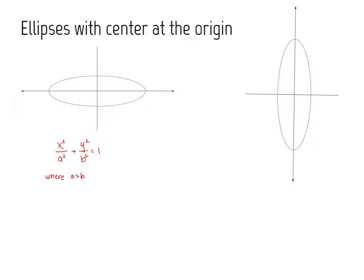Let's look at ellipses with center at the origin. We have two orientations. The first equation, x squared over a squared plus y squared over b squared equals 1, corresponds to an ellipse whose major axis is along the x-axis.